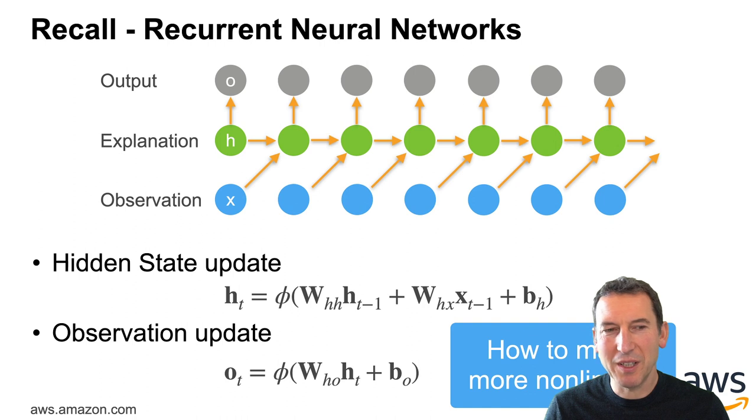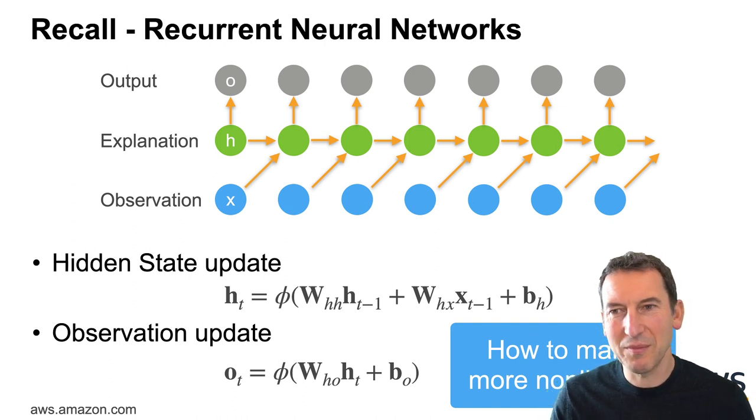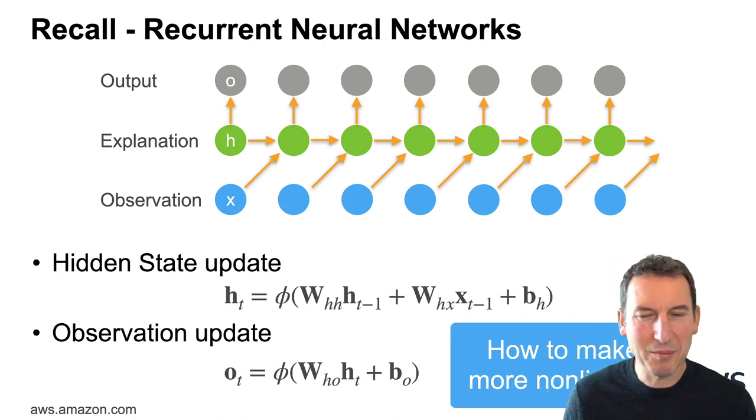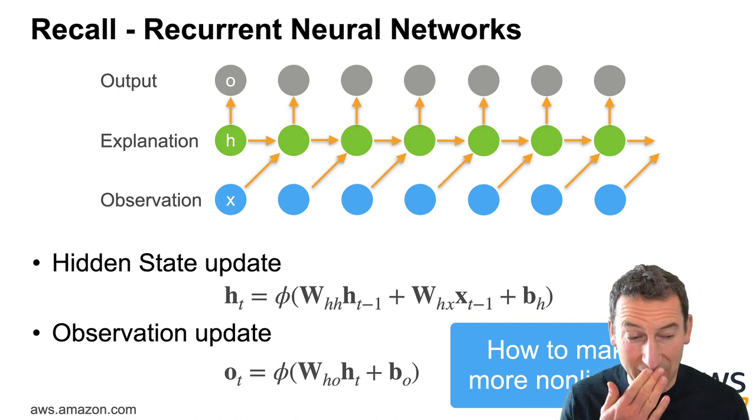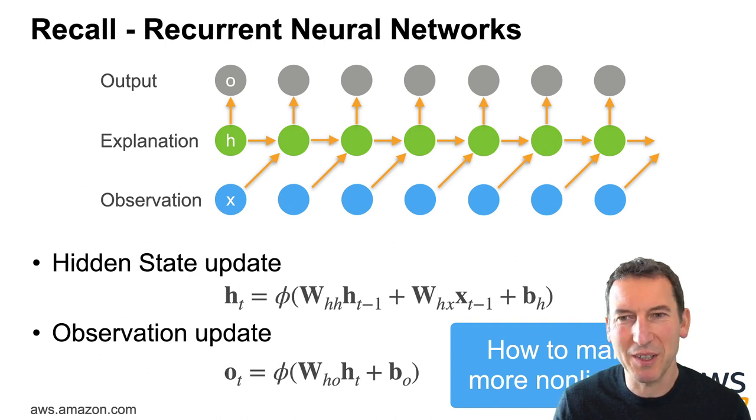So one way how to make things more non-linear is by replacing our simple perceptron with multi-layer perceptron on the inside. People have tried this and it works somewhat but it's not really great. It makes it harder to train and so on. So there's a much simpler way how to get there.